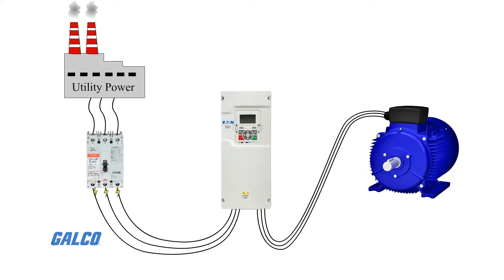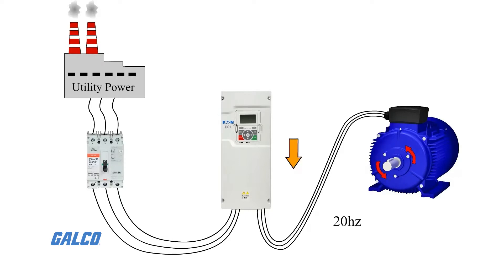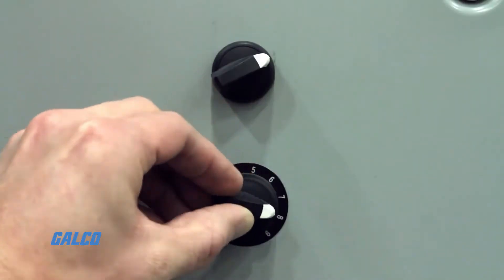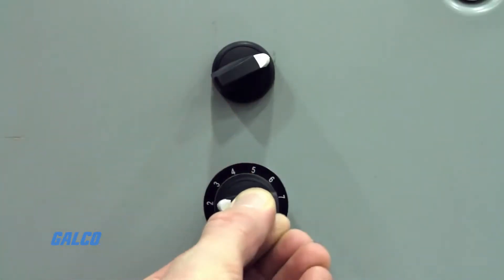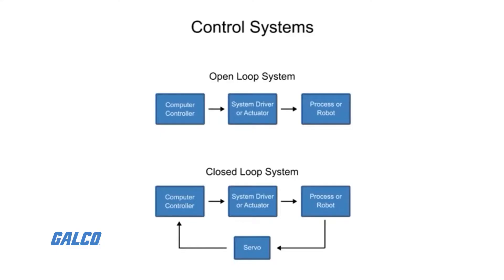Vector control is a control method for AC drives that enables precise control of speed or torque, and is quickly becoming the preferred method of nearly all AC motor applications. It transforms a three-phase system that is dependent on time and speed into a two-coordinate time-invariant system, which is done mathematically by using a Clark transform and a Park transform.